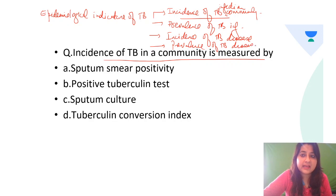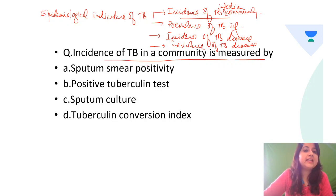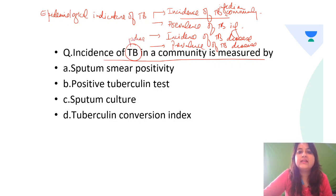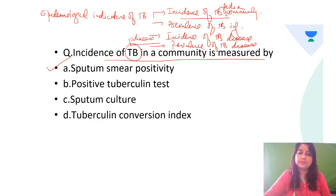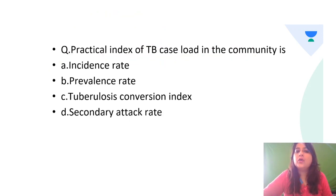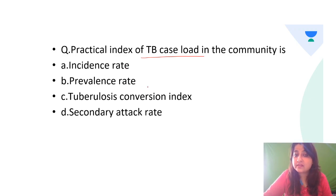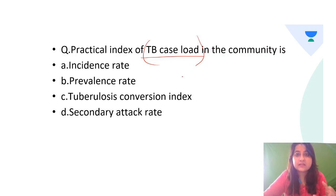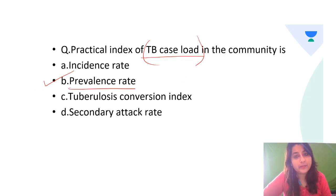So what is the answer to the first MCQ? Incidence of TB disease in a community is given by sputum smear positivity. Another MCQ asks: what is the practical index of TB case load in the community — incidence rate, prevalence rate, tuberculosis conversion index, or secondary attack rate? TB case load means how many cases there are — both new and old — so this is given by the prevalence rate.